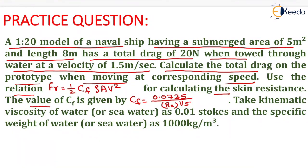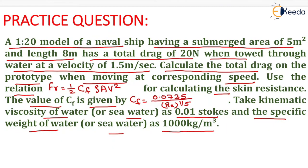Use the relation Fr equals half of Cf into rho A v-squared for calculating the skin resistance. The value of Cf is given by Cf equals 0.0735 upon Re to the power 1 by 5. Take kinematic viscosity of sea water as 0.01 stokes and specific weight of sea water as 1000 kg per meter cube.